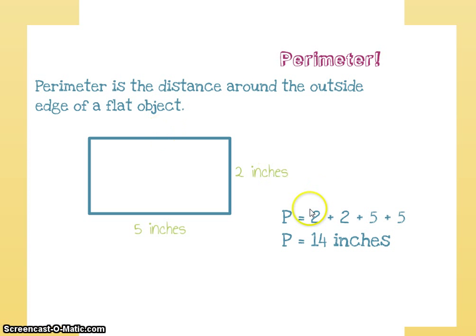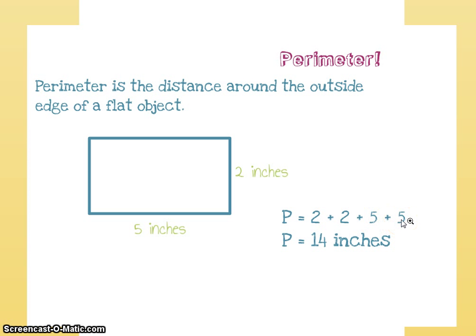All we'll do is say two plus two for both of the short edges, plus five plus five for the two long edges. If we add that up, we find out that it's 14 inches. So our perimeter of this rectangle is 14 inches.